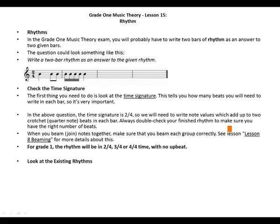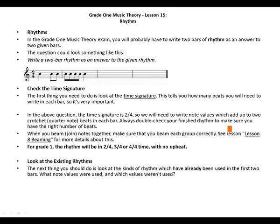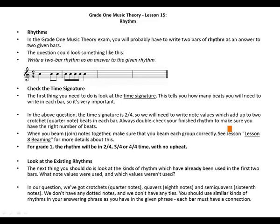The next thing you should do is look at the kinds of rhythm which have already been used in the first two bars — what note values were used and which values weren't used. In our question we've got crotchets, quavers, and semiquavers. We don't have any dotted notes and we don't have any ties. You should use similar kinds of rhythms in your answering phrase as you have in the given phrase. Each bar must have a connection.